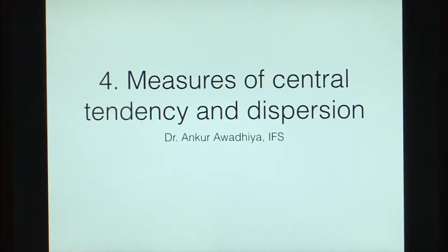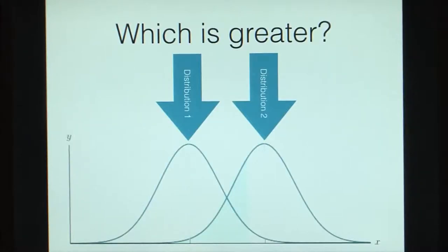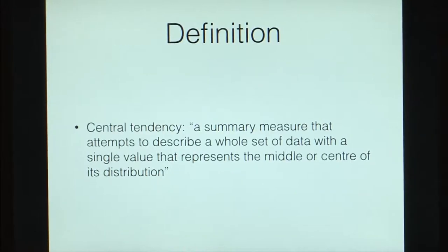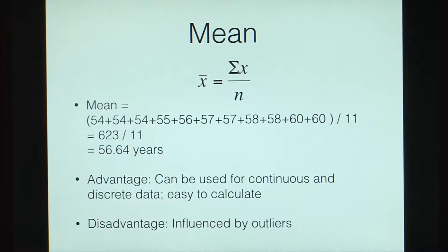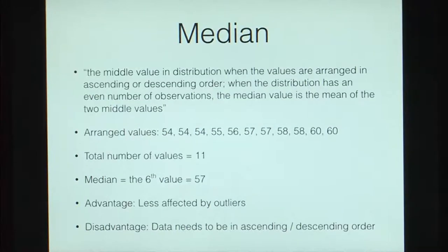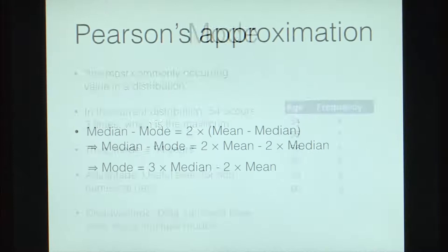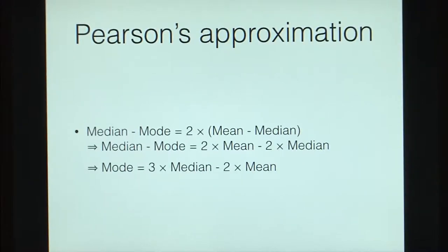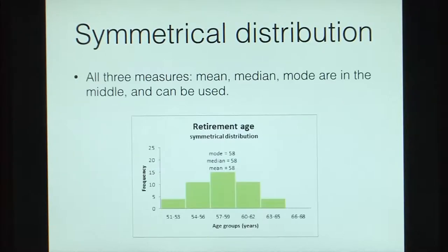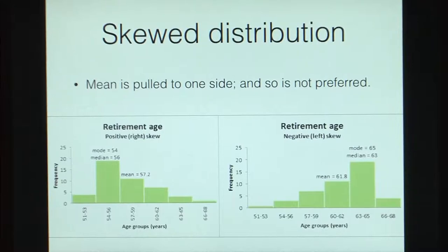Next, we looked at measures of central tendency and dispersion. We defined central tendency: mean is the sum of all values divided by the total number of values; median is the central value when arranged in ascending or descending order; and mode is the value that appears most frequently — values might be unimodal, bimodal, trimodal, or multimodal. We also looked at Pearson's approximation: mode = 3×median − 2×mean. For symmetrical distributions, any of the three can be used as the middle value, but for skewed distributions mean is pulled to one side and is not representative.